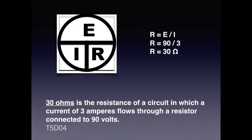In question T5D04, we are asked to solve for resistance given a current of 3 amps and 90 volts. Covering the R on the chart, we see that R is equal to E divided by I. We plug in the values and divide 90 by 3. Since resistance is measured in ohms, our answer is expressed with the Greek symbol omega. For the exam, know that 30 ohms is the resistance of a circuit in which a current of 3 amps flows through a resistor connected to 90 volts.